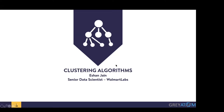Ishan Jain is a senior data scientist at Walmart Labs on the supply chain analytics team. He has over eight years of hands-on data science experience and has previously worked with Loholm's Improvement, Dell, and Absolute Data Analytics. He completed his B.Tech from RIT Roorkee and is a self-taught data scientist who believes in learning by doing. Outside work, he plays table tennis, badminton, and is trying to master drums these days. Please connect with him on LinkedIn as well.